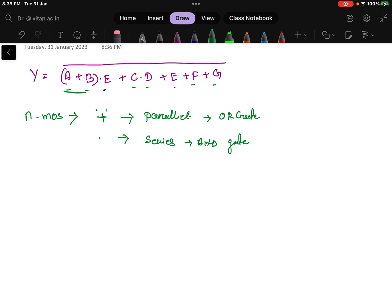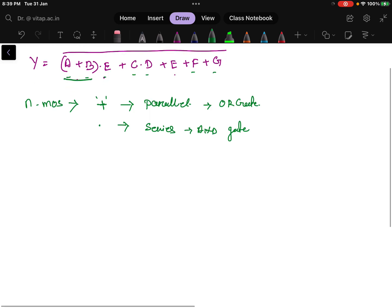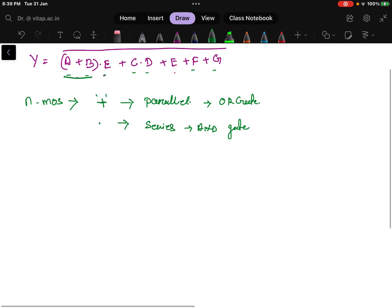Let us start with the first term, which is A + B. I can consider A + B as one term, C·D as one, then E as one, F as one, and G as one. If I consider these five terms, they all are in plus, meaning they are going to be in parallel. So I will have five parallel lines. In NMOS, VDD will be given here.